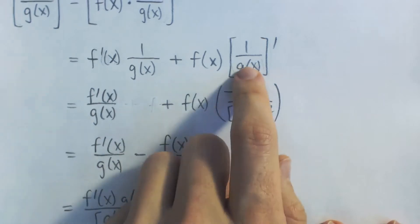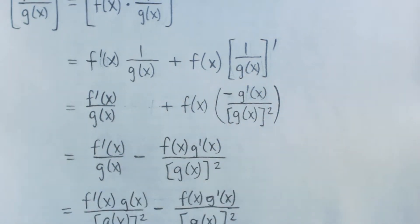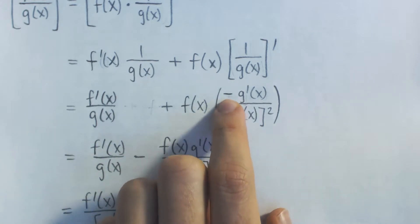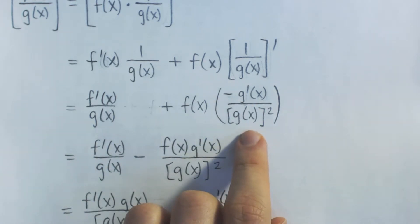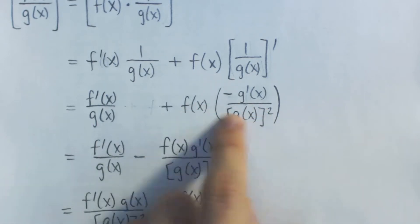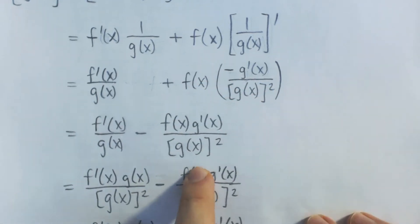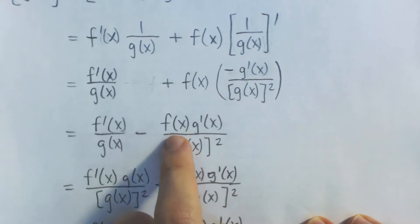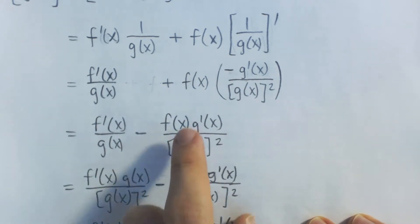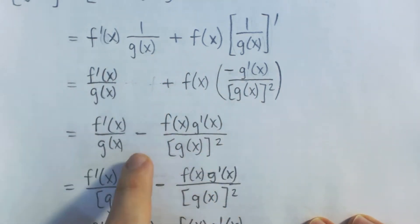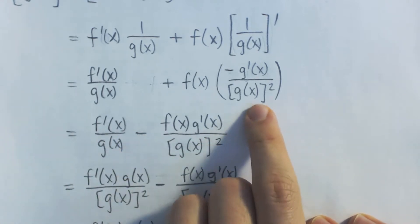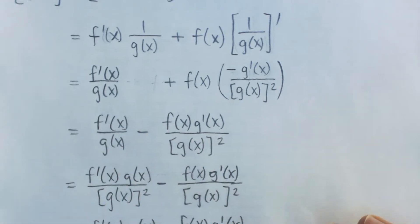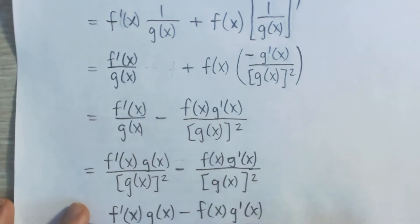On the right, what is the derivative of 1 over g of x? We can use the reciprocal rule, which says that this is equal to negative times the derivative of g divided by g of x squared. So now this multiplication on the right: we have f of x times g prime of x in our numerator, and don't forget that negative sign — I'm going to bring that out in front, so we're subtracting these two terms, and in the denominator we still have g of x squared.